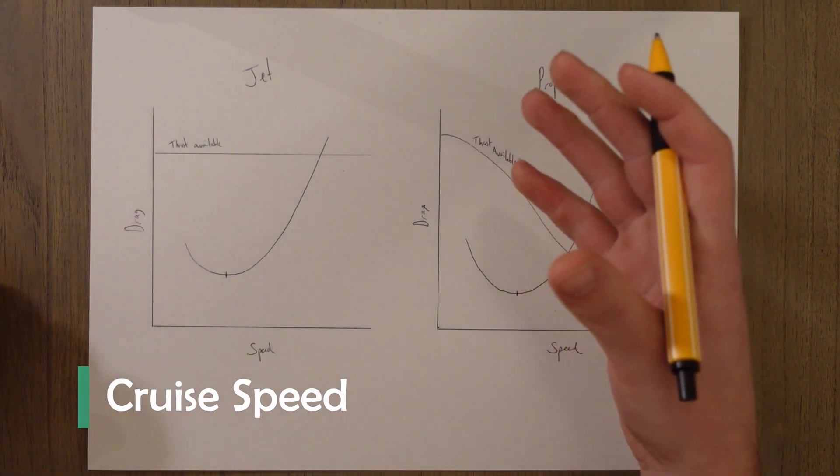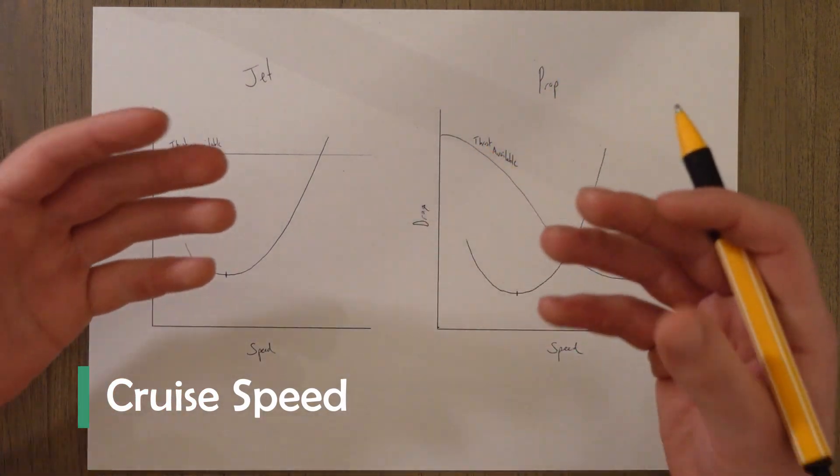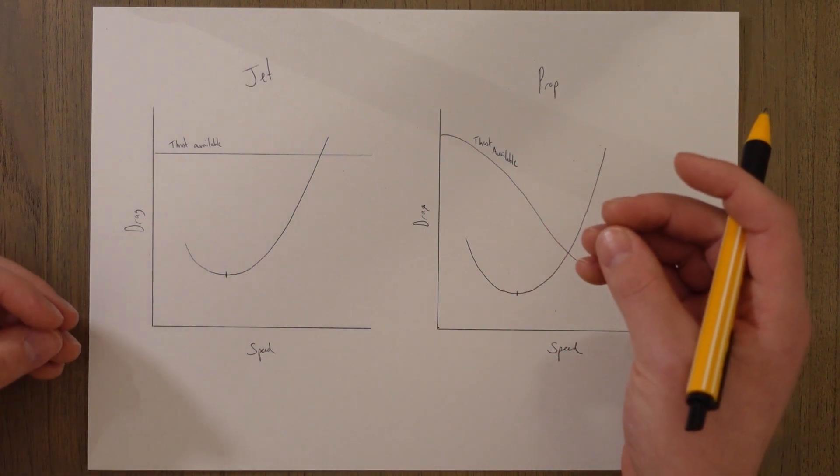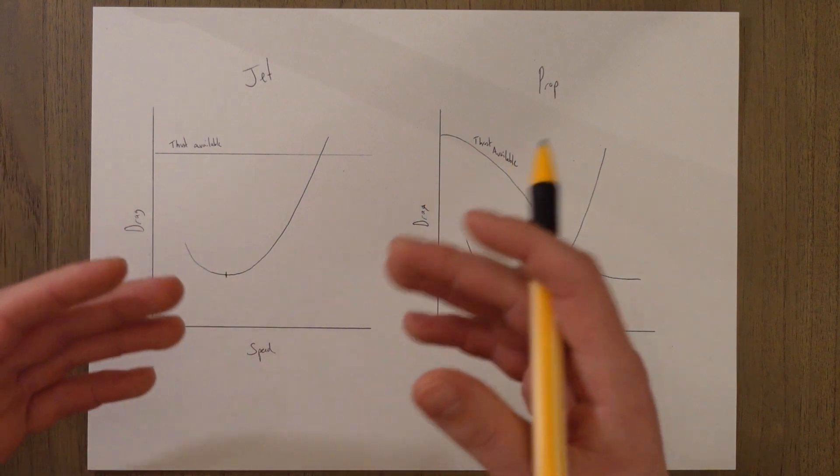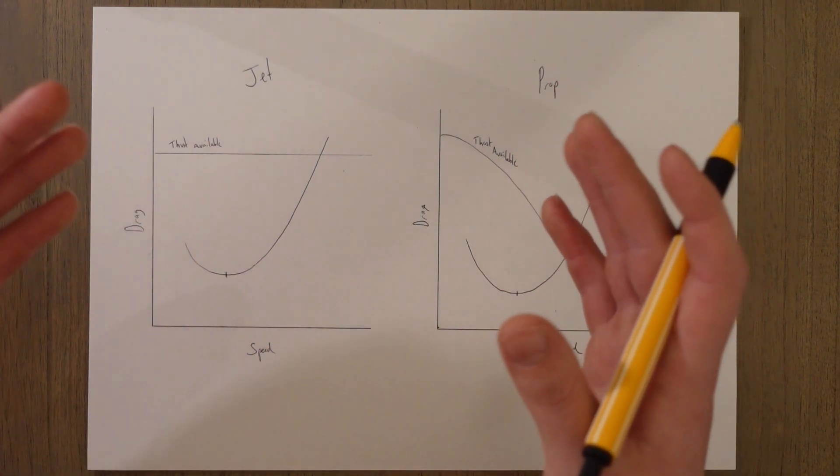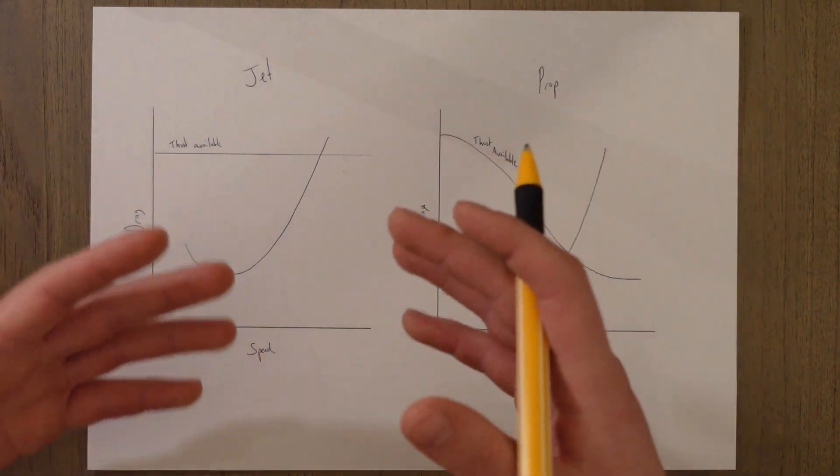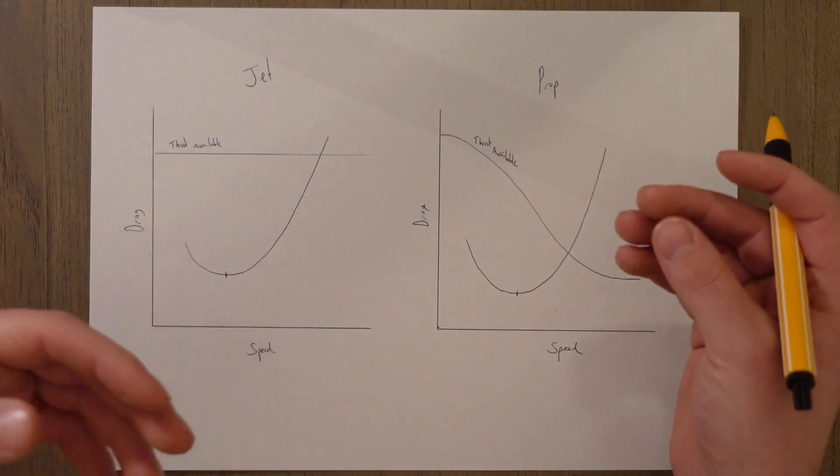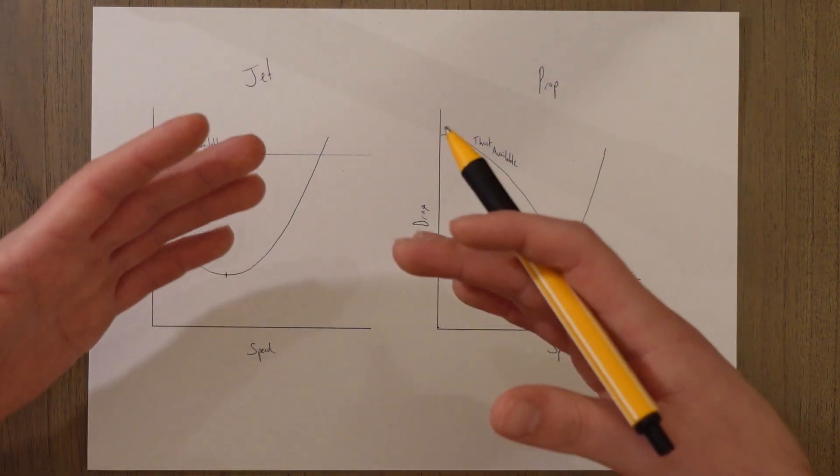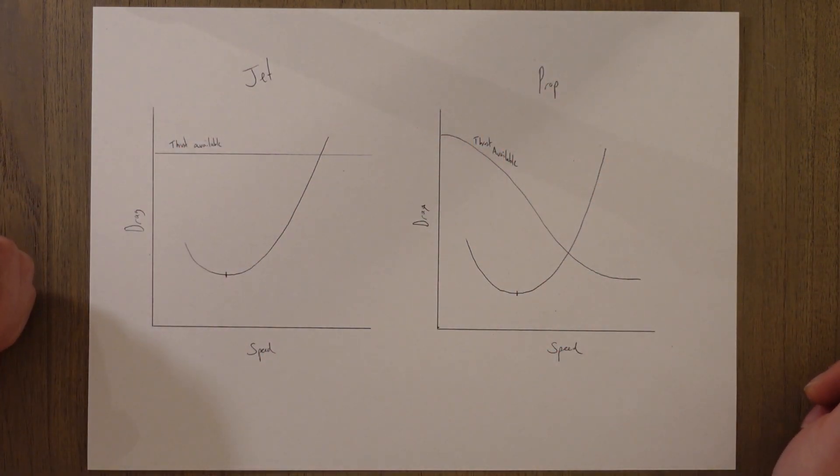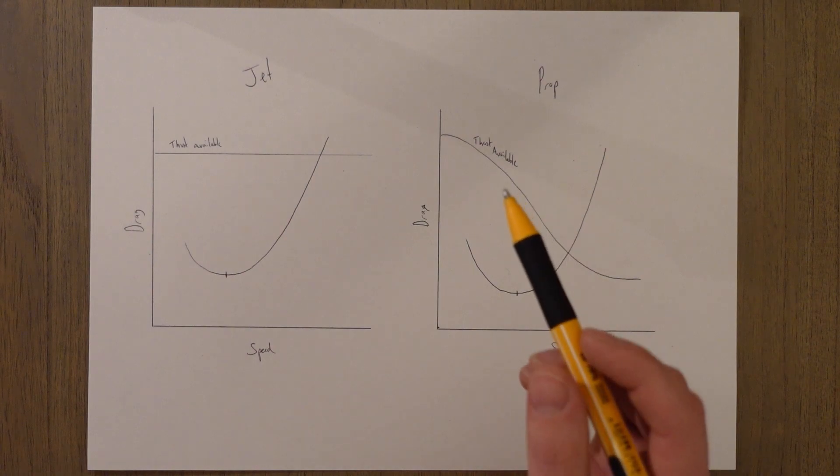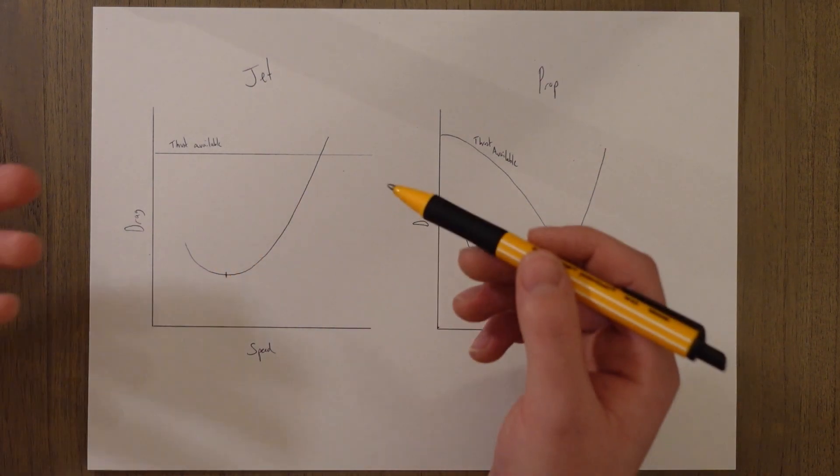In theory we want to cruise at a speed close to if not at the maximum speed we possibly can. In practice though we fly according to something called a cost index which will dictate our maximum speed. By flying faster we burn more fuel so there's a compromise between flight speed and fuel burn. The companies we're flying for find a sweet spot where we don't burn too much fuel but we also don't fly too slow to make the flight unnecessarily long. This compromise is given a numerical value which is the cost index and we put that into the computer on board the aircraft.